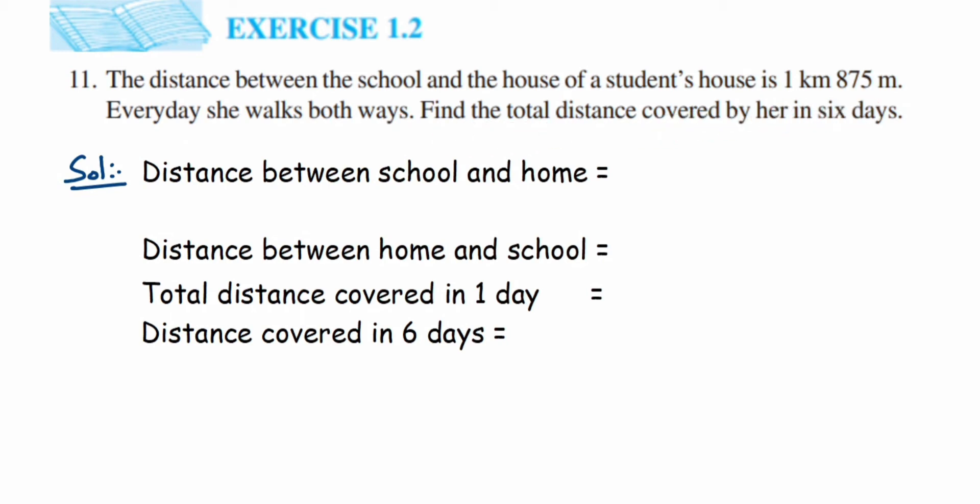Now this is a very simple question. They have given the distance between the school and the home, and they are also given that she always goes by walk. So we have to find out total distance covered by her in six days. Now here we know that distance traveled by her while going to school and while coming back from school is 1 kilometer 875 meter.